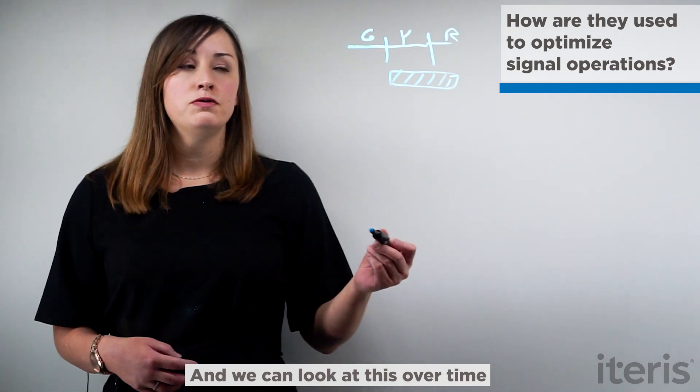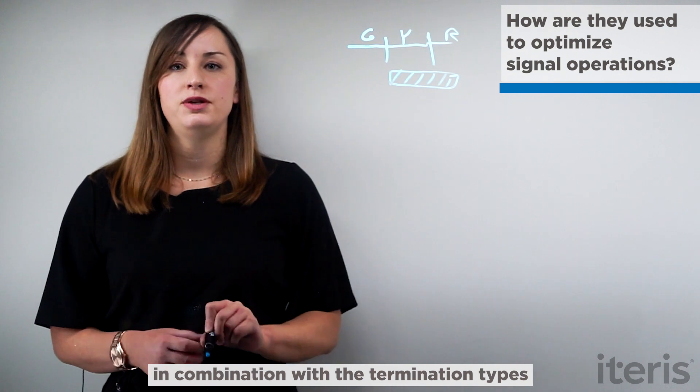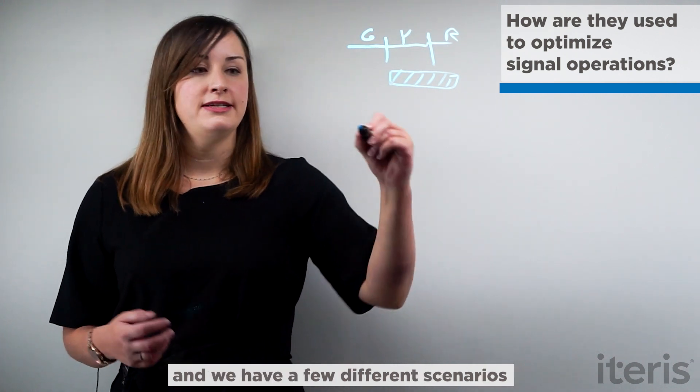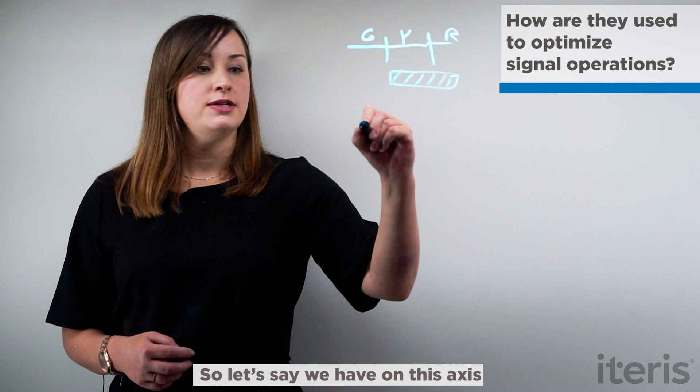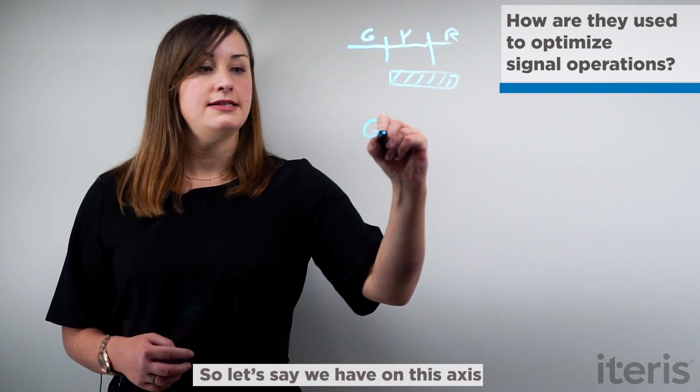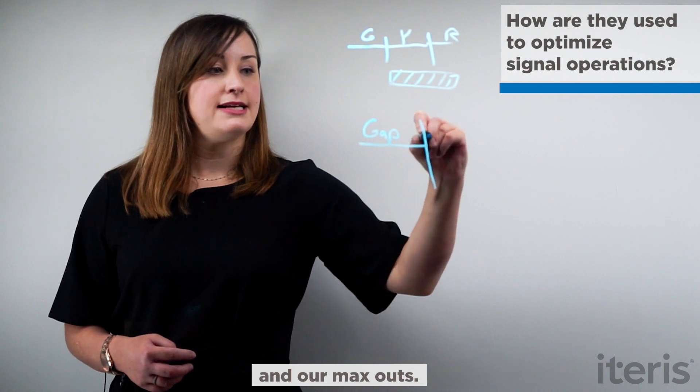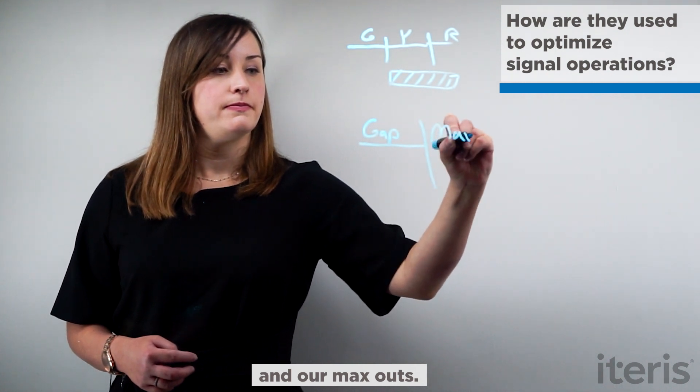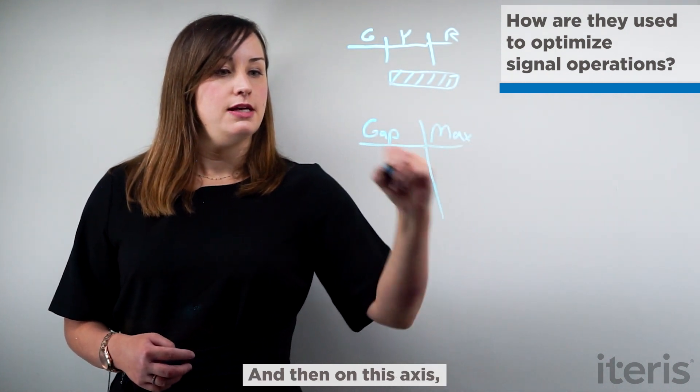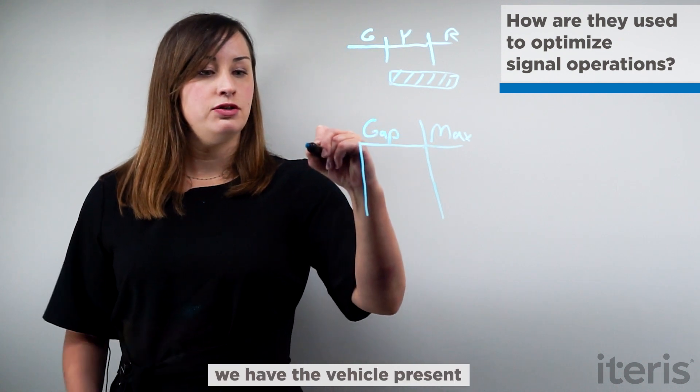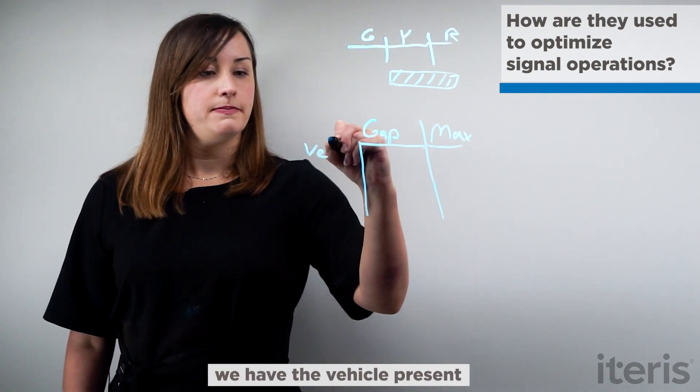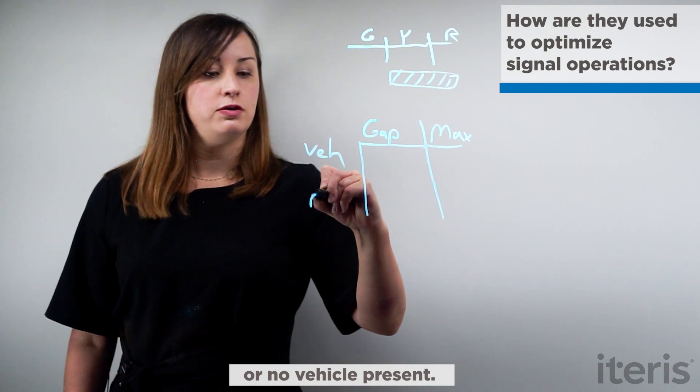And we can look at this over time in combination with the termination types and we have a few different scenarios we can consider. So let's say we have on this axis our gap outs and our max outs, and then on this axis we have the vehicle present or no vehicle present.